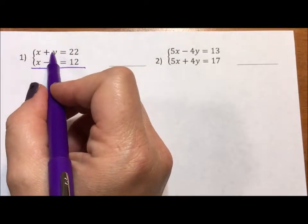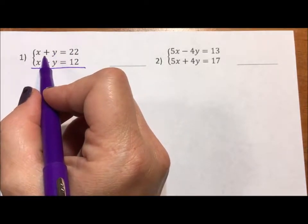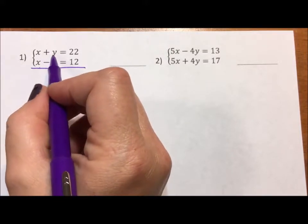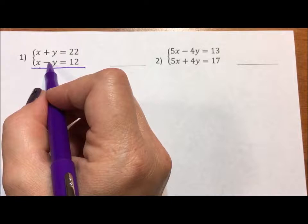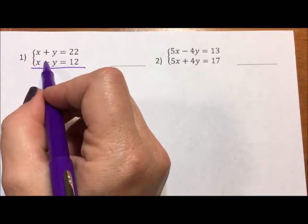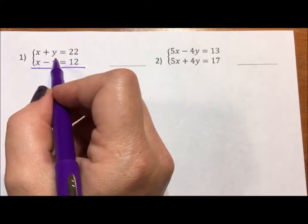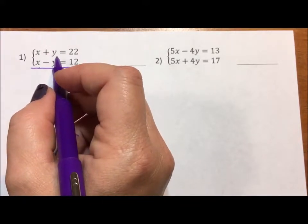because the y coefficient—coefficient means number multiplied to variable—the numbers multiplied to y, the coefficients are equal, they're both 1 in value, but opposite, positive and negative in sign. Meaning if I add down y minus y, the y's will eliminate, thus elimination.